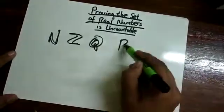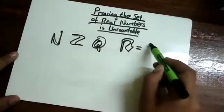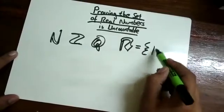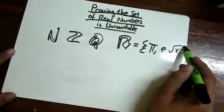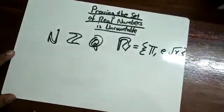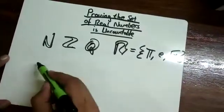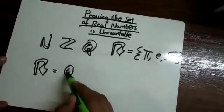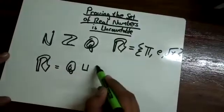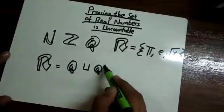The set of real numbers contains some very difficult numbers to categorize, such as pi, e, and the square root of x. So it is best to consider the following relationship: Real numbers are equal to the union of rational numbers and irrational numbers.